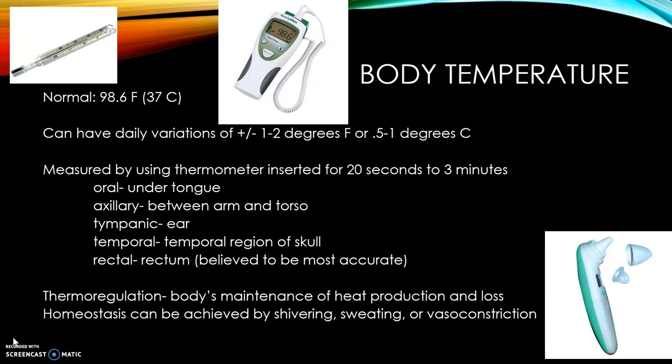The normal body temperature is 98.6 degrees Fahrenheit, or 37 degrees Celsius. You can have daily variations that are plus or minus 1 to 2 degrees Fahrenheit, or 0.5 to 1 degrees Celsius. Body temperature is measured by using a thermometer that is inserted for 20 seconds to 3 minutes. For an oral thermometer,